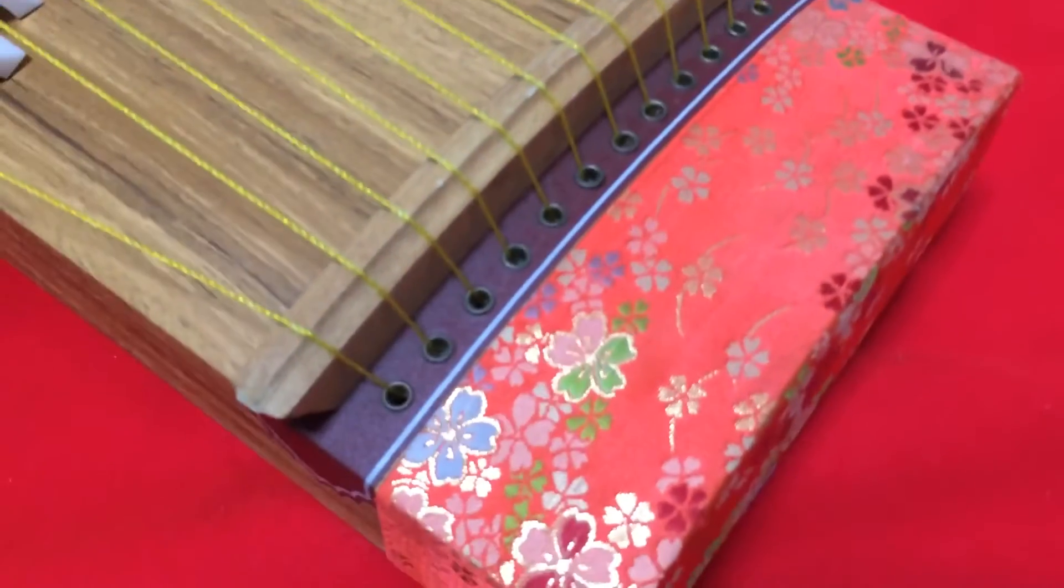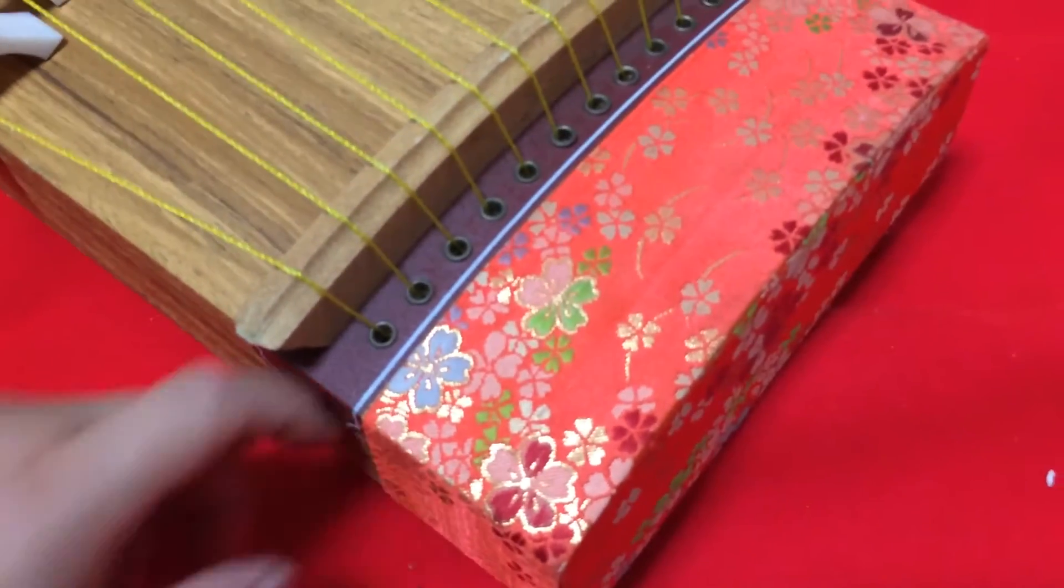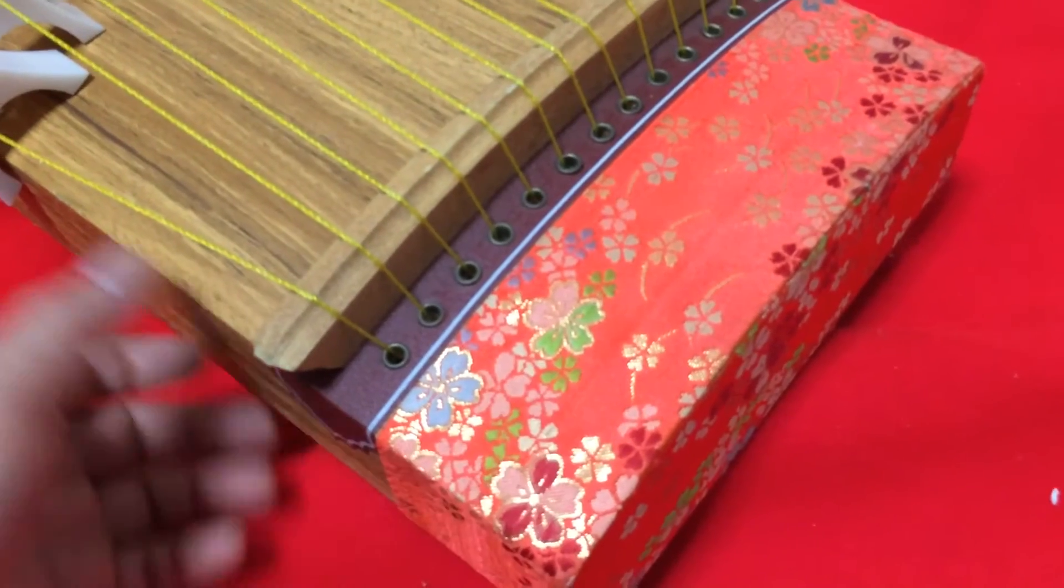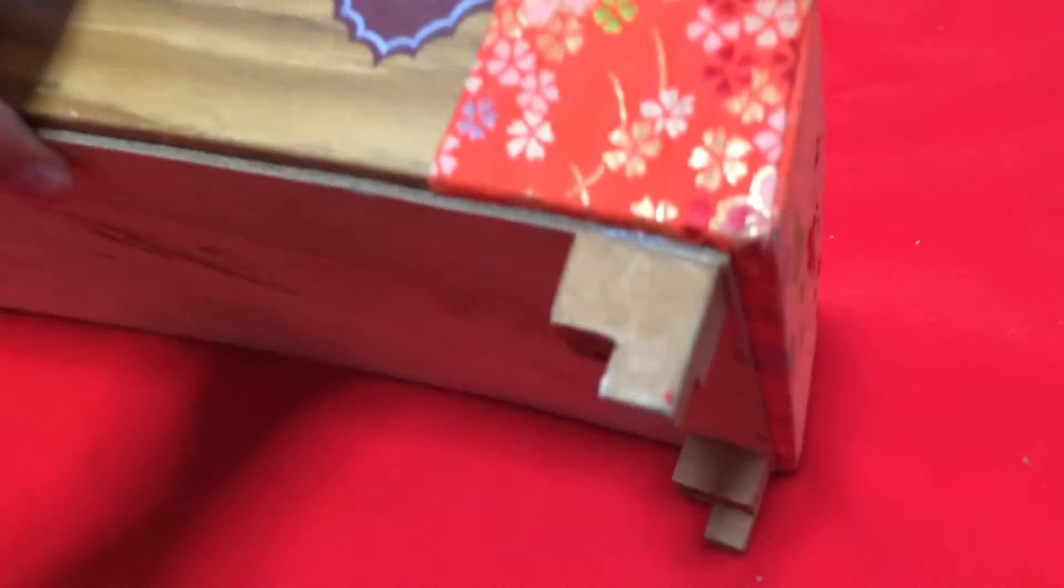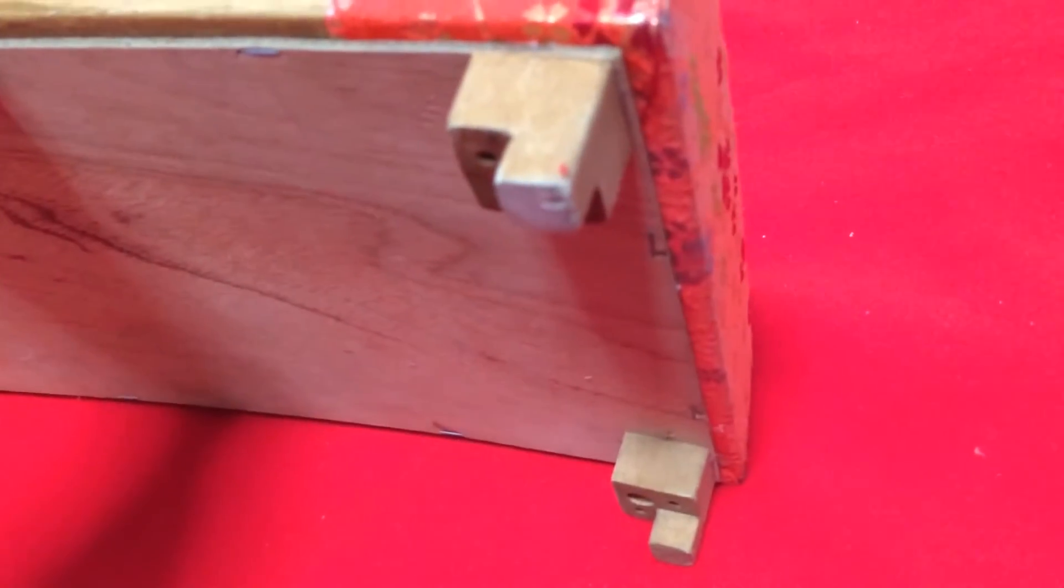On this end here, this is where you pluck. We have a cover here for decoration. Usually it's a cap that you can take off, but with this mini Koto, it's actually glued onto the board.